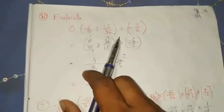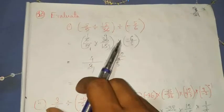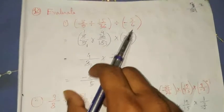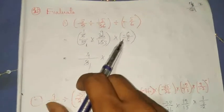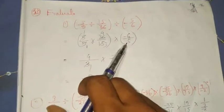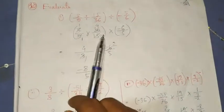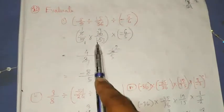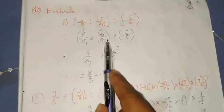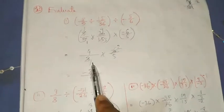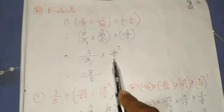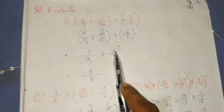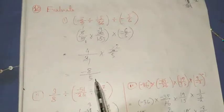Similarly, here we have to change the sign and take the reciprocal of the term. The reciprocal of 5 by 6 is 6 by 5. Then divide the numerator and denominator by the common factor. We get 4 by 3 into 6 by 5. Cancelling 6 by 3, you will get minus 8 by 5.